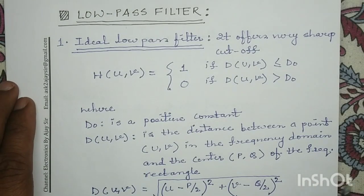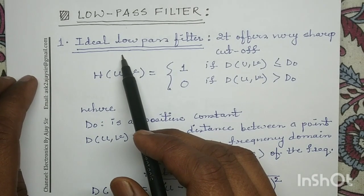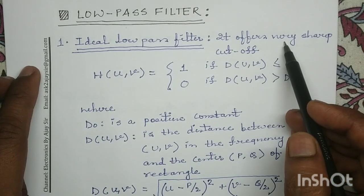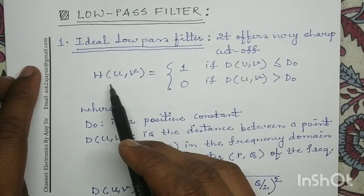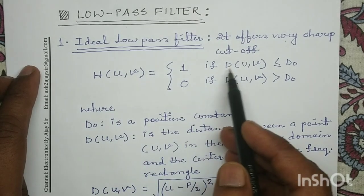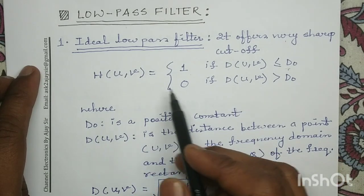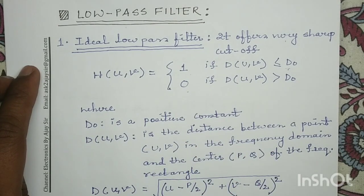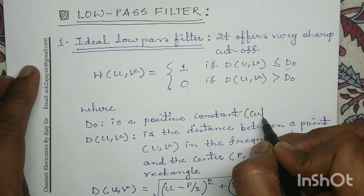The first type is the ideal low pass filter. The ideal low pass filter offers a very sharp cutoff. Its transfer function H(u,v) equals 1 if D(u,v) is less than or equal to D₀, and H(u,v) equals 0 if D(u,v) is greater than D₀. Here D₀ is a positive quantity also called the cutoff frequency.